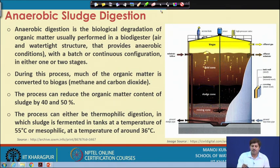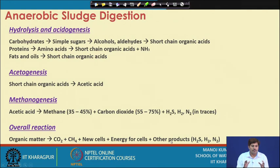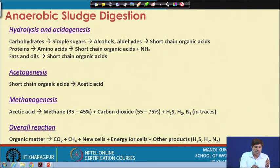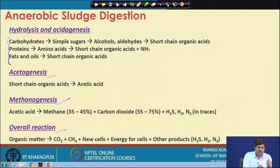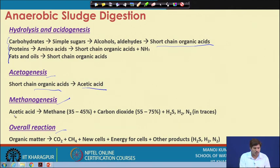A typical anaerobic digestion process involves hydrolysis and acidogenesis, then acetogenesis, then methanogenesis, and an overall reaction. The idea is to first break down larger chain compounds — carbohydrates and proteins — into short-chain organic acids, then convert these to acetic acid through acetogenesis. Methanogenesis then converts these to methane and carbon dioxide, along with other trace elements.